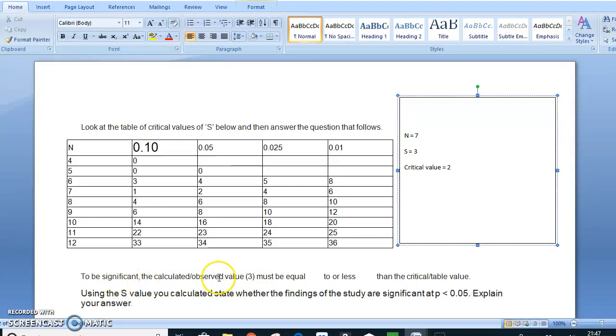So I'm going to put this information in now, critical value of 2. So it says here, to be significant, the calculated value of 3 must be equal to, now I'm going to write in the word 2, because that's what we've just found, so it's definitely not equal to 2, which is fine, or less. So observe value of 3 must be less than 2. 3 is not less than 2.